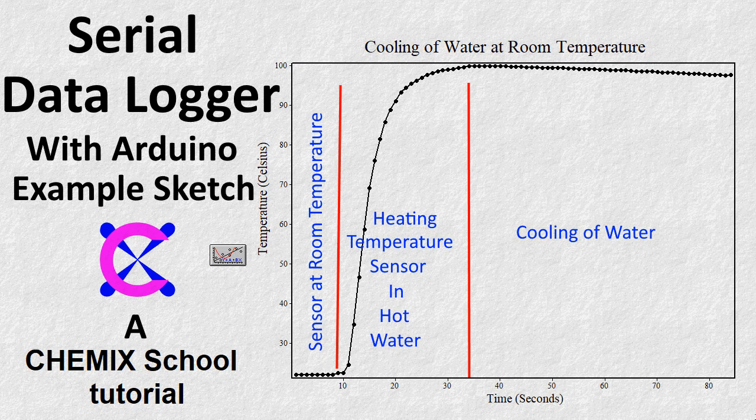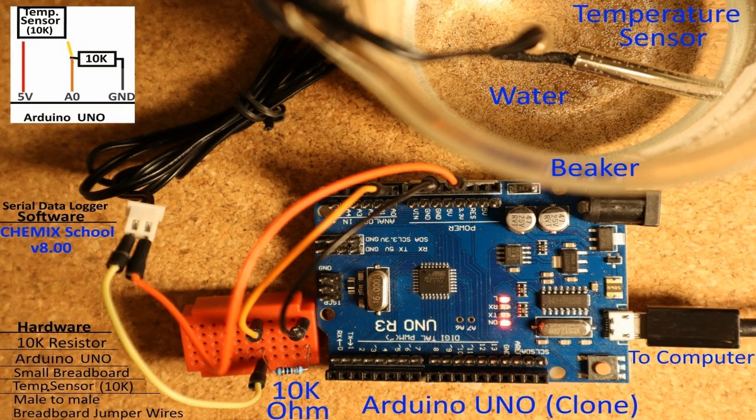For the data acquisition, we will also need a microcontroller — in this case, an Arduino Uno or a compatible clone. As the sketch already contains a simulation of the experiment, we only need the microcontroller and the downloadable sketch, plus the Chemex School software and the Arduino IDE software.